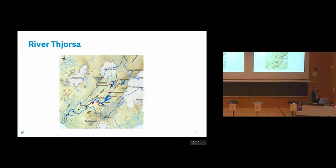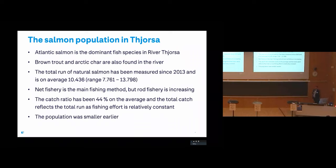Here you can see the watershed and some of the reservoirs. In Þjórsá, the dominant species is Atlantic salmon, but we also have brown trout and Arctic char.